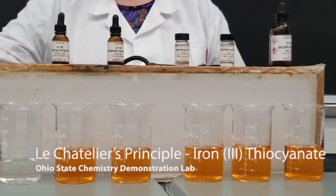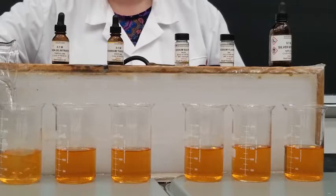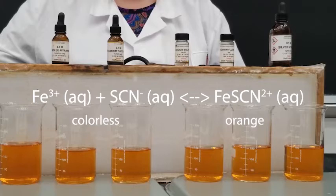We're going to use Le Chatelier's principle to predict how an equilibrium will shift when perturbed. First, we need a reference beaker. This is the reaction between iron 3 plus and thiocyanate ion. This is the colored iron thiocyanate.